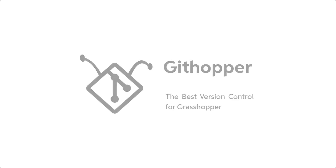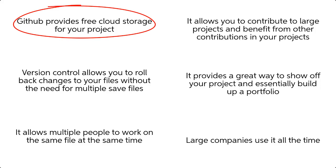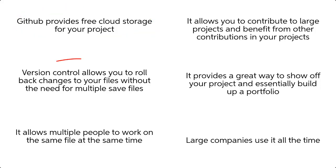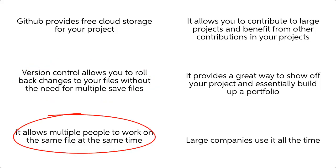You should start using it for 6 reasons. First, GitHub provides free cloud storage for your project. Second, version control allows you to roll back changes to your files without the need for multiple save files. Third, it allows multiple people to work on the same file at the same time.